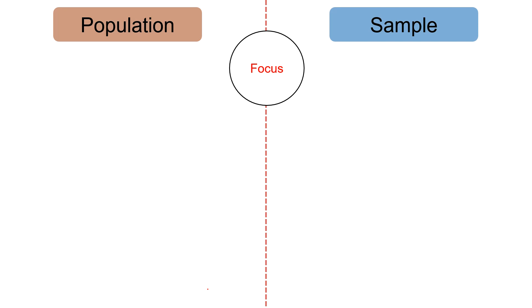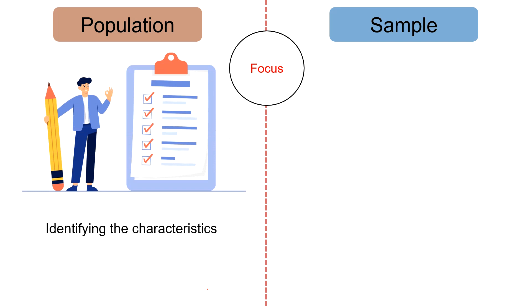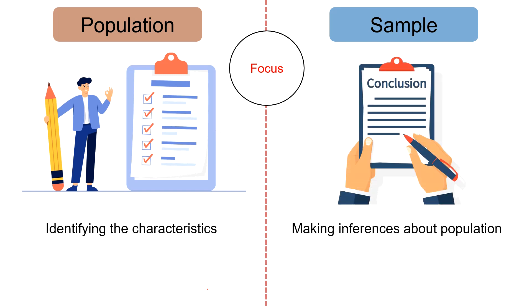Next, focus. With population, the focus is to identify the characteristics of the elements. Whereas in the case of sample, the focus is on generalizing the characteristics of the population from which the sample came from.